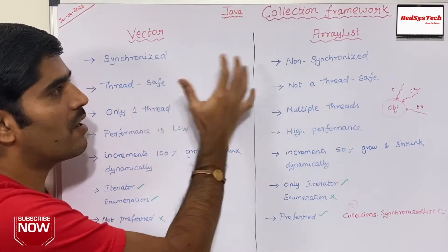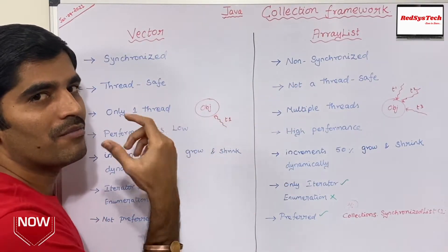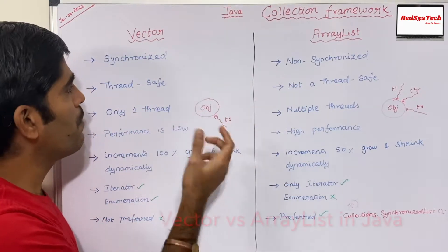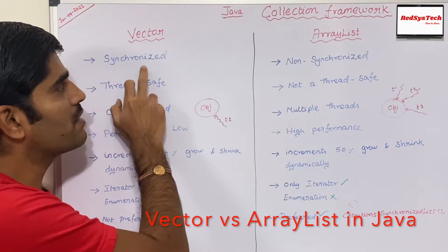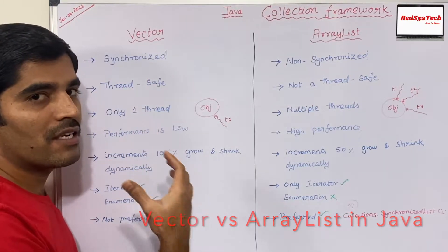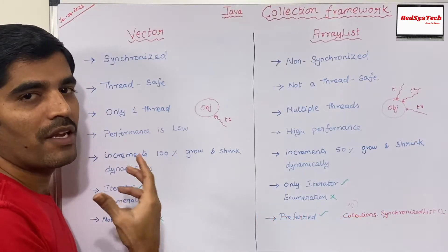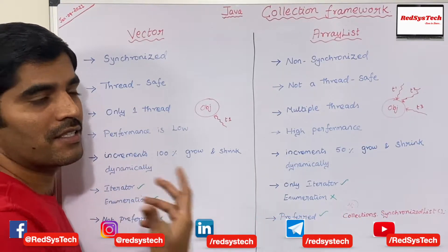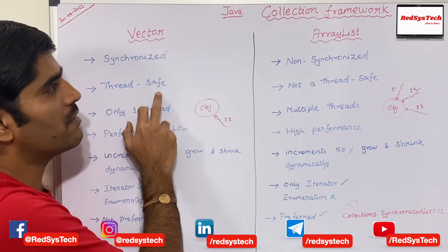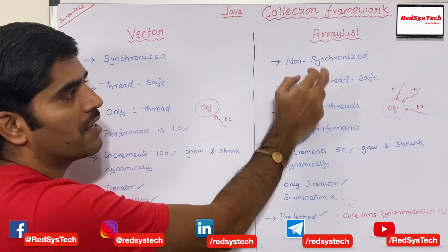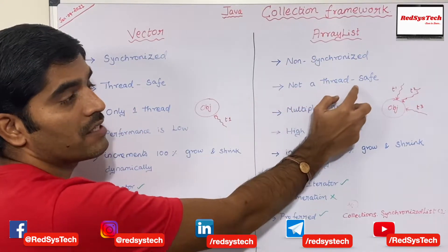Basically, this is all related to the multithreading concept. If you think about synchronized — if the methods are synchronized, it means it's thread safe. So Vector is a thread safe class and ArrayList is not a thread safe class.